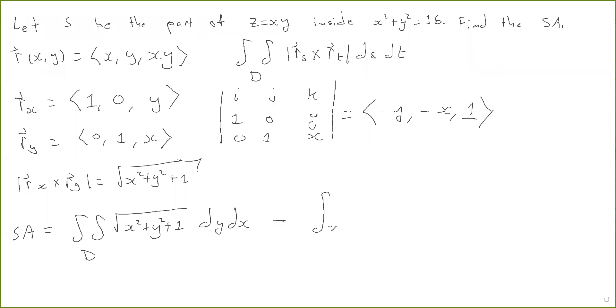So this is going to be the integral theta equals 0 to 2 pi, R equals 0 to 4, the square root of 1 plus R squared R dr d theta.